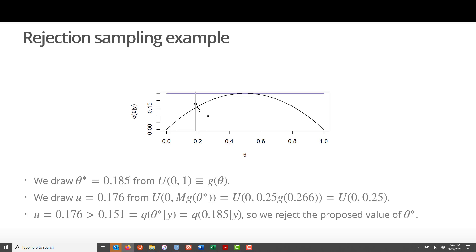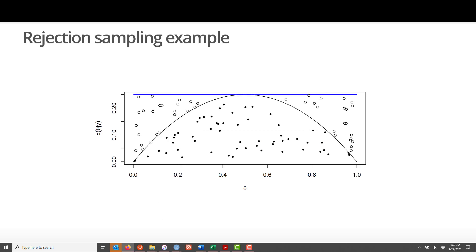Notice that this time, the value of (theta star, U) is above the target density, which is why we rejected it. In this slide, we've continued the same process as before, keeping track of when we reject the proposed value of theta star and the accepted values of theta star. Notice that anytime the point (theta star, U) is below the target density, we retain the proposed value. Anytime the point (theta star, U) is above the target density, we reject the proposed value.